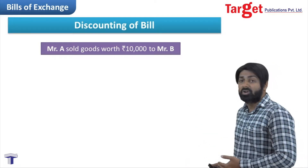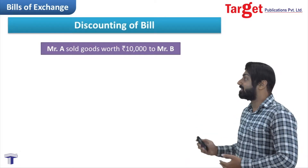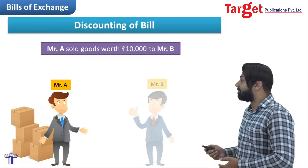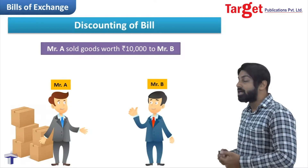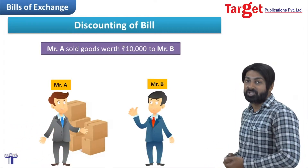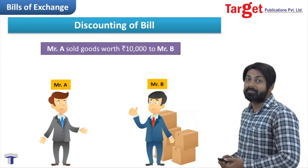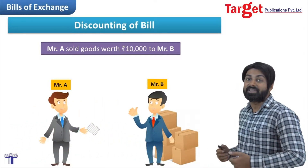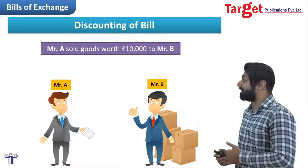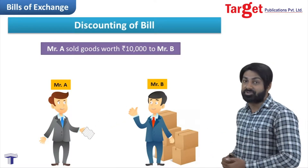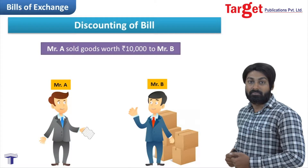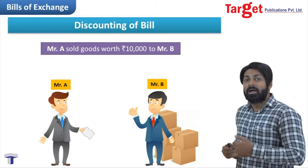Mr. A sold goods worth rupees 10,000 to Mr. B. Mr. A becomes the seller, Mr. B becomes the buyer. Mr. A delivered the goods. Mr. B did not make the payment, but in return Mr. B is accepting the bill which is drawn by Mr. A.